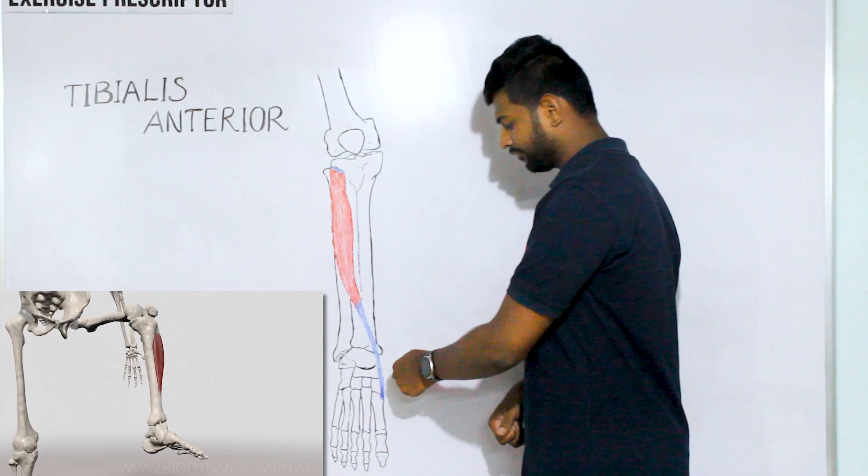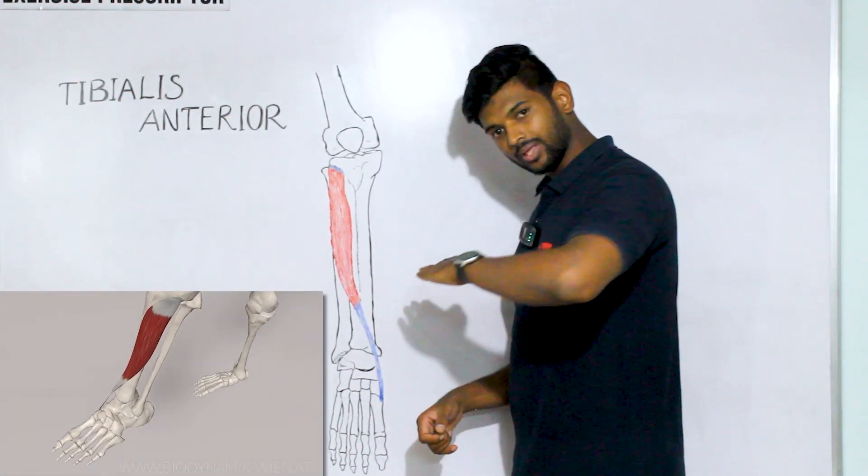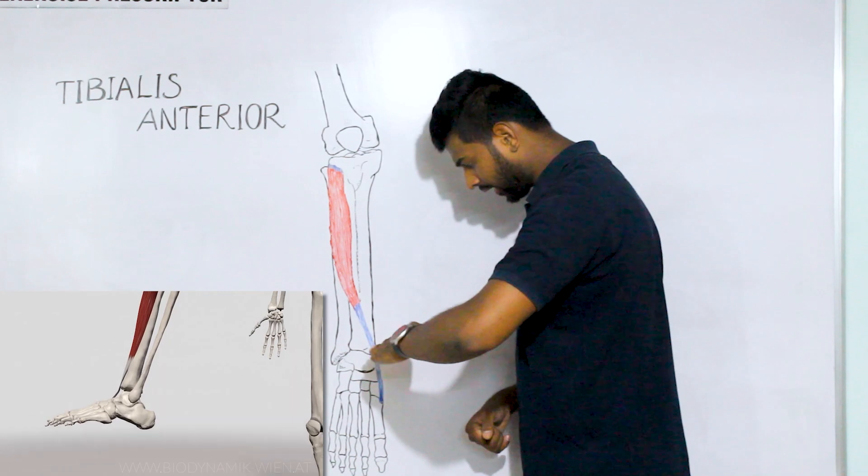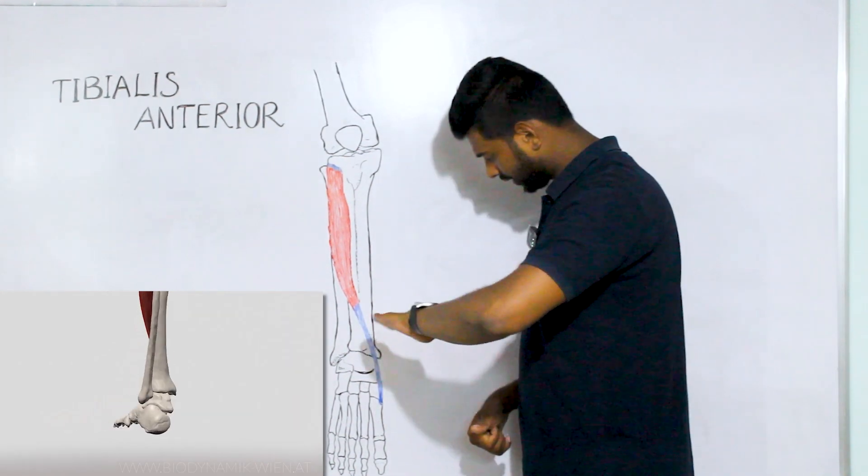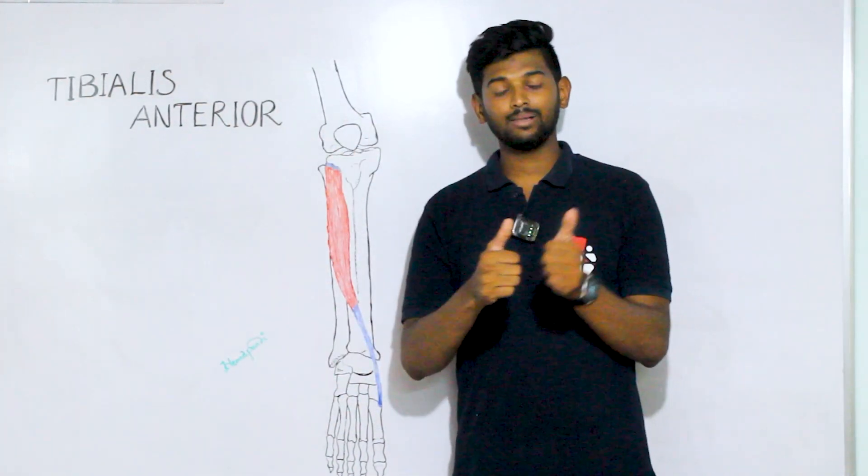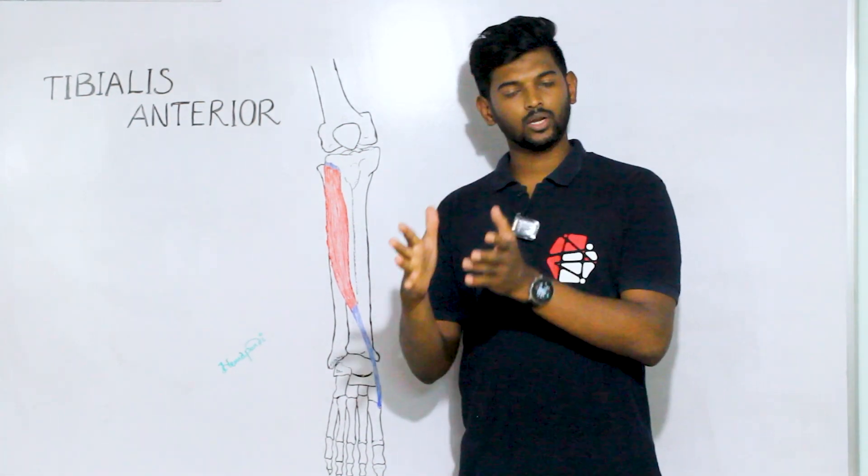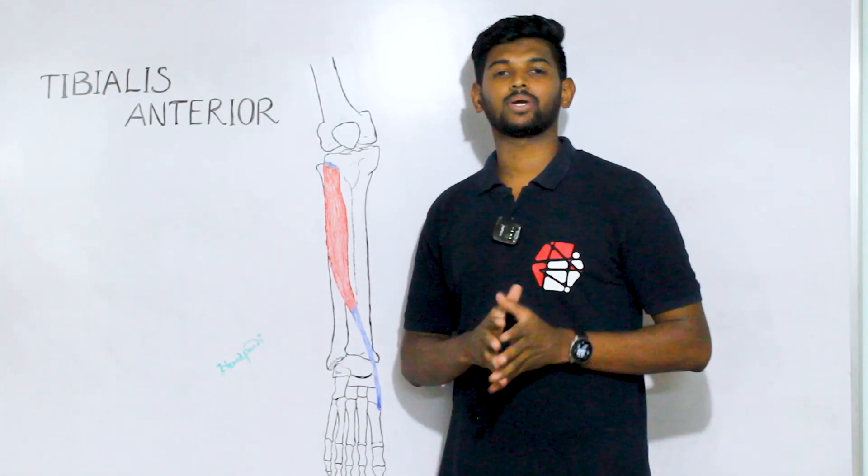Also the tibialis anterior passing the ankle joint medially, the fibers are pulled in this way, the force is transmitted to the calcaneus and rotates the subtalar joint inward. So the tibialis anterior helps in dorsiflexing the ankle joint and inverting the subtalar joint.